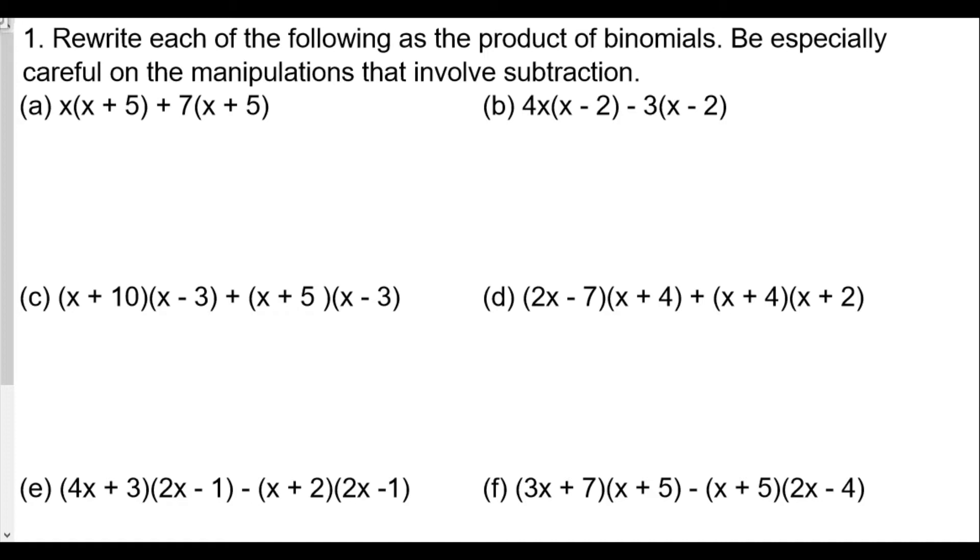Question number 1 says rewrite each of the following as a product of binomials. Be especially careful of manipulations that involve subtraction. So we're using the distribution method. We multiply x times x to get x squared, plus 5x, then 7 times x is 7x, and 7 times 5 is plus 35. I like stacking my terms so like terms are under each other. So I get 5x plus 7x is 12x plus 35.